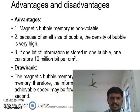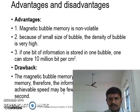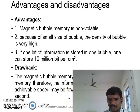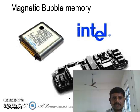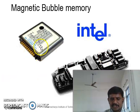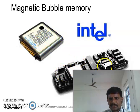The drawbacks of bubble memory: the magnetic bubble memory is not a random access memory, therefore the information must be used serially. The achievable speed may be a few hundred kilobytes per second. These are the limitations of the magnetic bubble memories, which are used in chips as well as microprocessors.